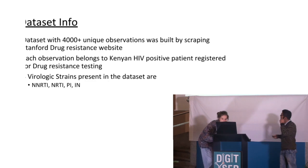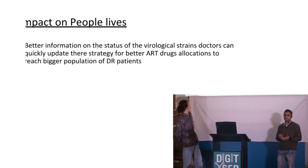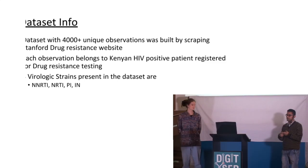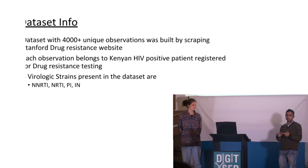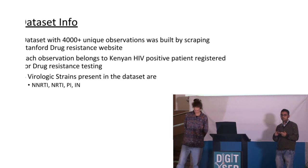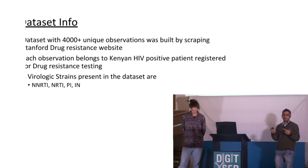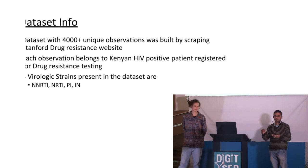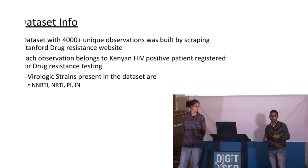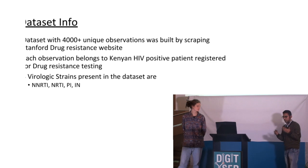The dataset has 4,000 plus unique observations, one for each patient. They have been tested for drug resistance, and for each of those observations we have the mutations occurring for those patients. Our assumption is: if a patient has any major or minor mutation, then that patient is drug resistant. If the patient has none of those mutations, they are not drug resistant.